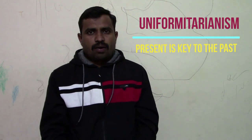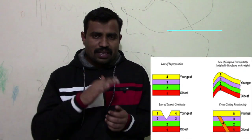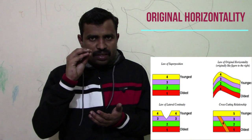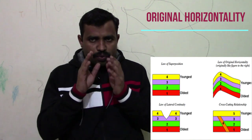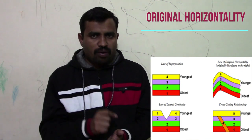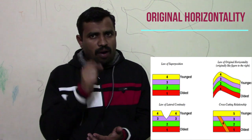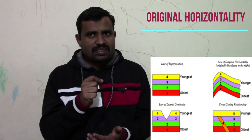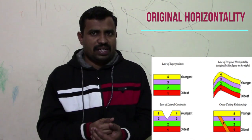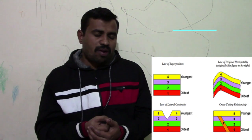The second principle is original horizontality. This principle states that sediments are deposited in a horizontal manner. Imagine pouring water into a cup — the surface of the water is perfectly flat and horizontal. If you dump that water into a bowl the surface remains flat. Now imagine a jelly mixture in a bowl: if you seal it, it solidifies, and then pour a different color on top, you have two flat layers of jelly on top of each other. This is similar to how sedimentary rocks are formed.